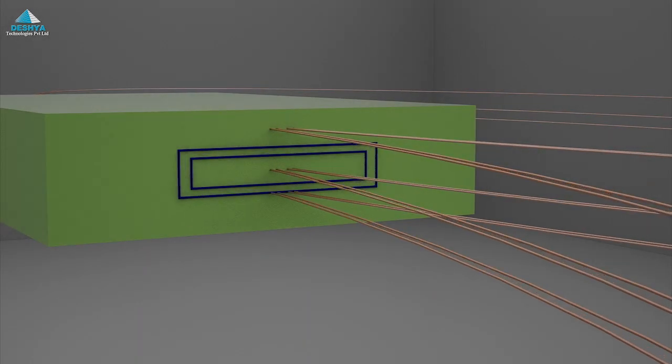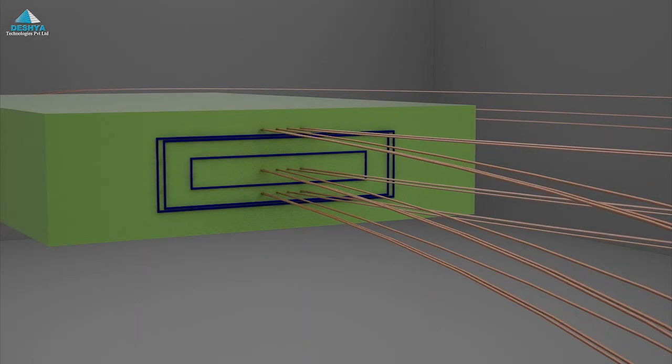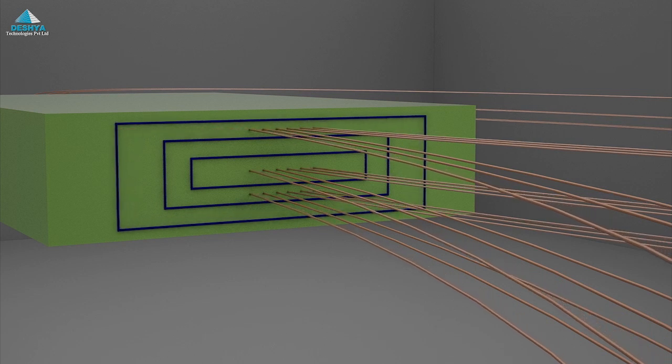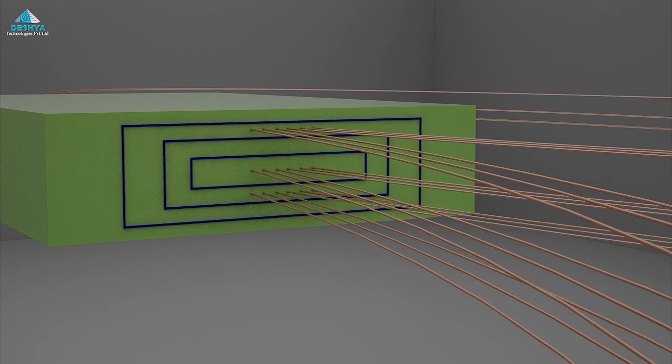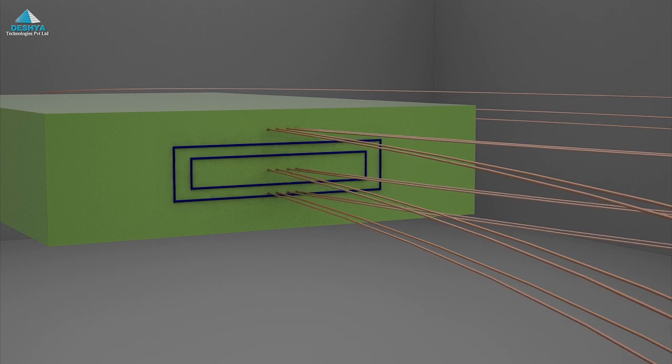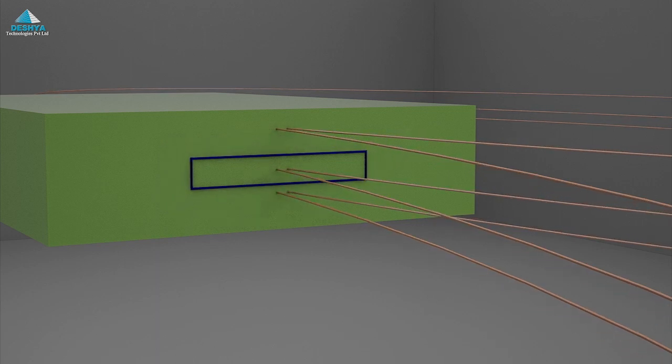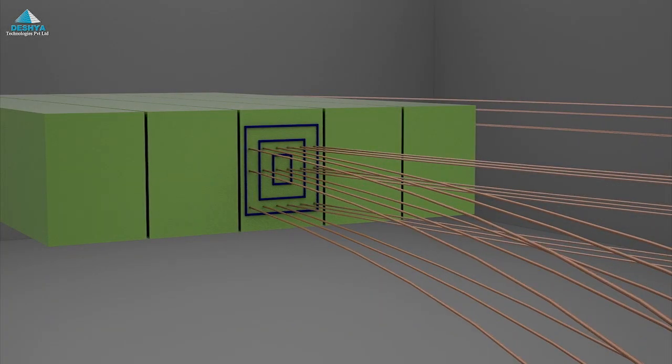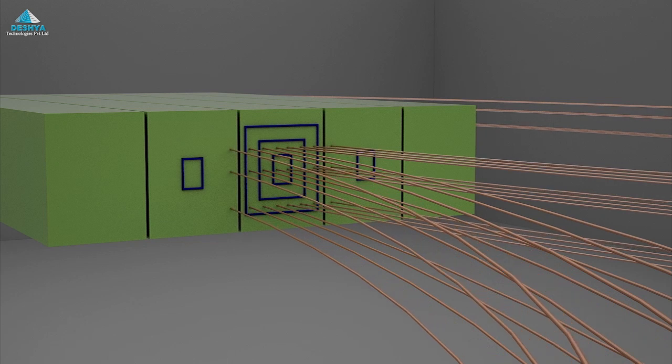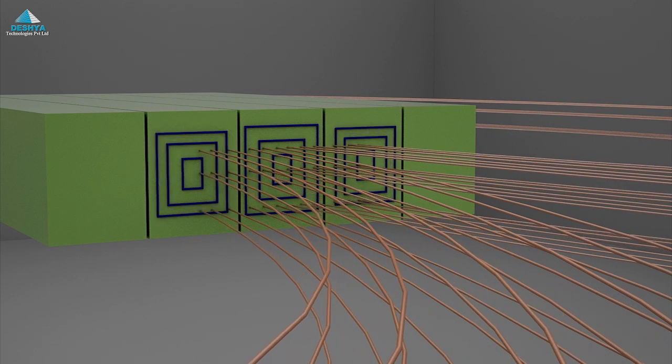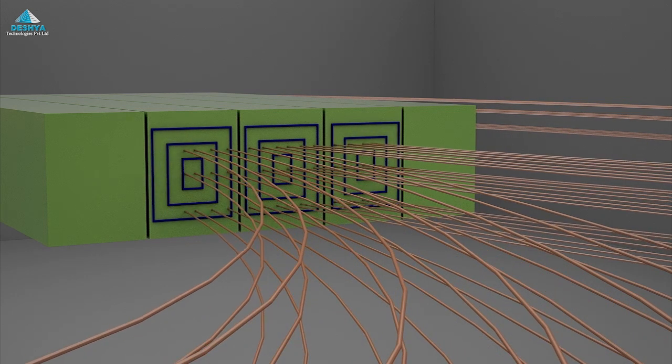The second phenomenon responsible for core loss is eddy current. Eddy currents appear when an electrical conducting material is exposed to external magnetic field. The animation shows the eddy current in a bulk material. A common technique to reduce eddy current is to use laminations. Due to lamination, the effective resistance increases and hence the eddy current reduces. This is the reason why the cores of machines are laminated.